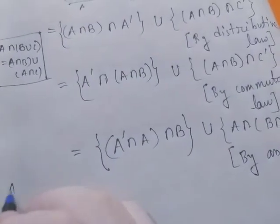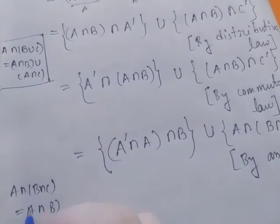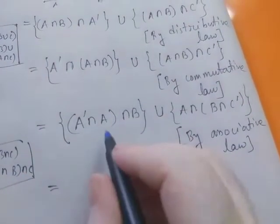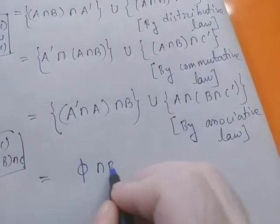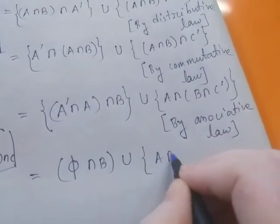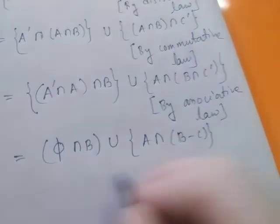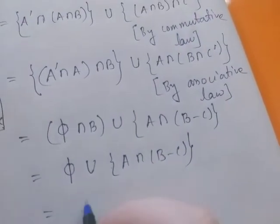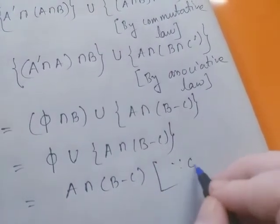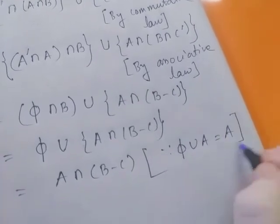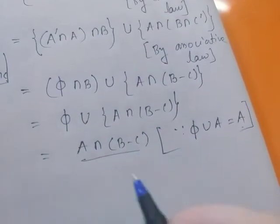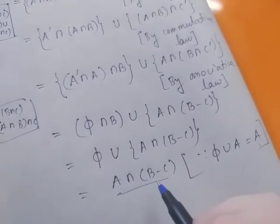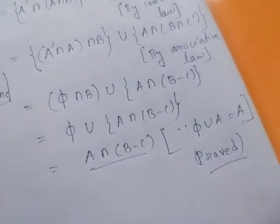Since we know A complement intersection A equals phi, this gives us phi intersection B union (A intersection B intersection C complement). Now phi intersection B is phi, so this equals phi union (A intersection B minus C), which equals A intersection B minus C, since phi union A equals A for every set A. Therefore, A intersection (B minus C) equals (A intersection B) minus (A intersection C). Proved. If you like this video, please share, subscribe, and comment.